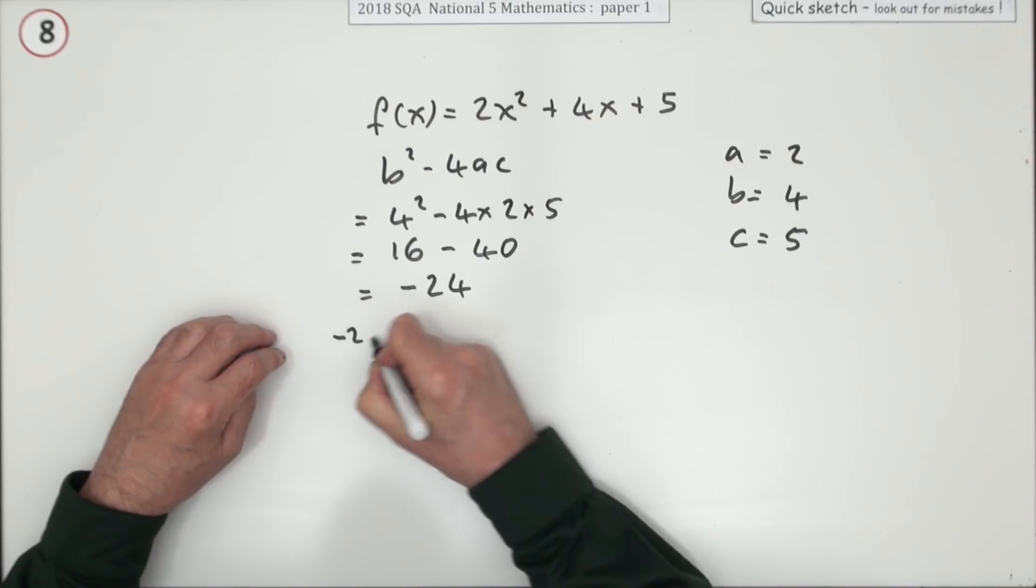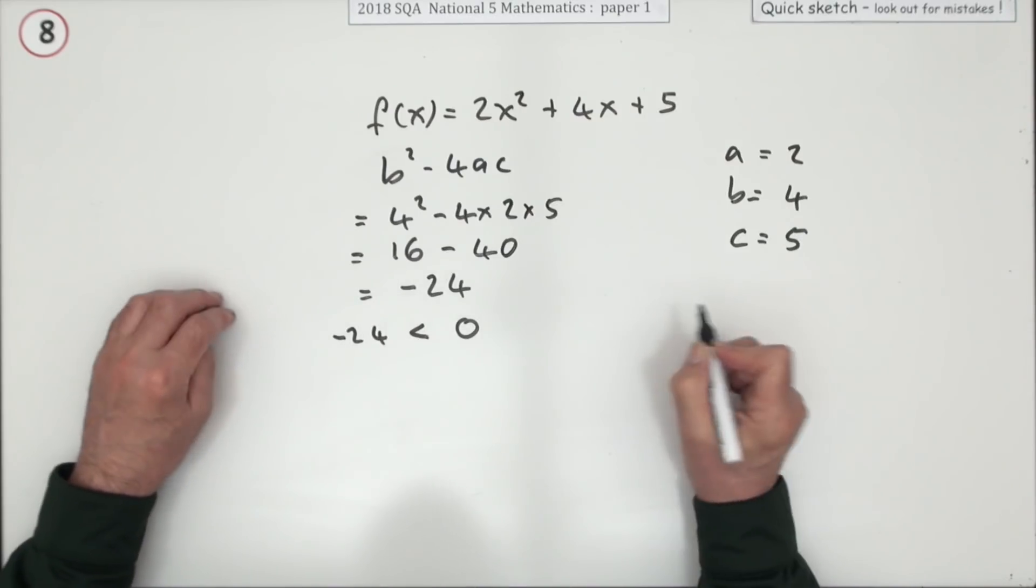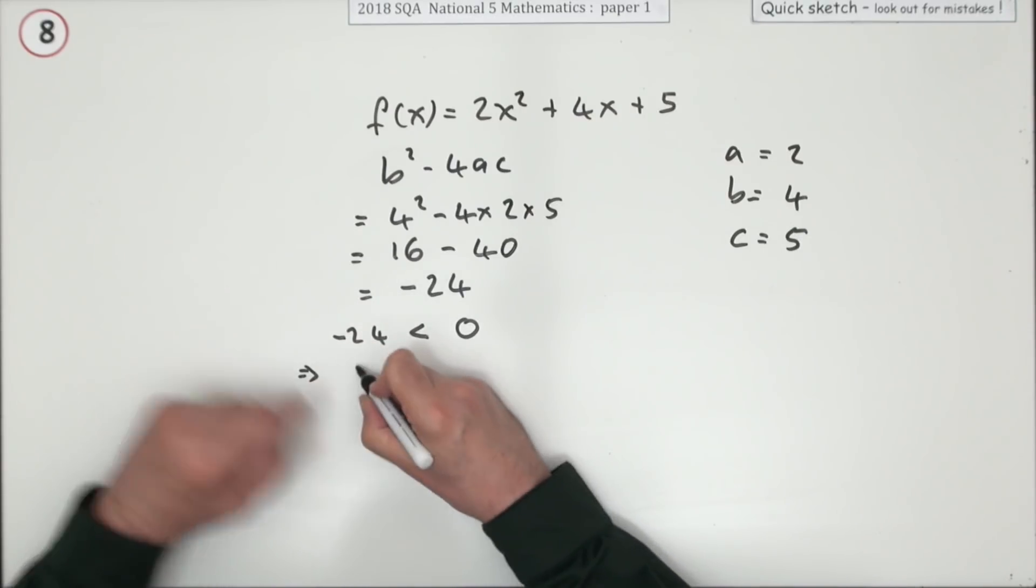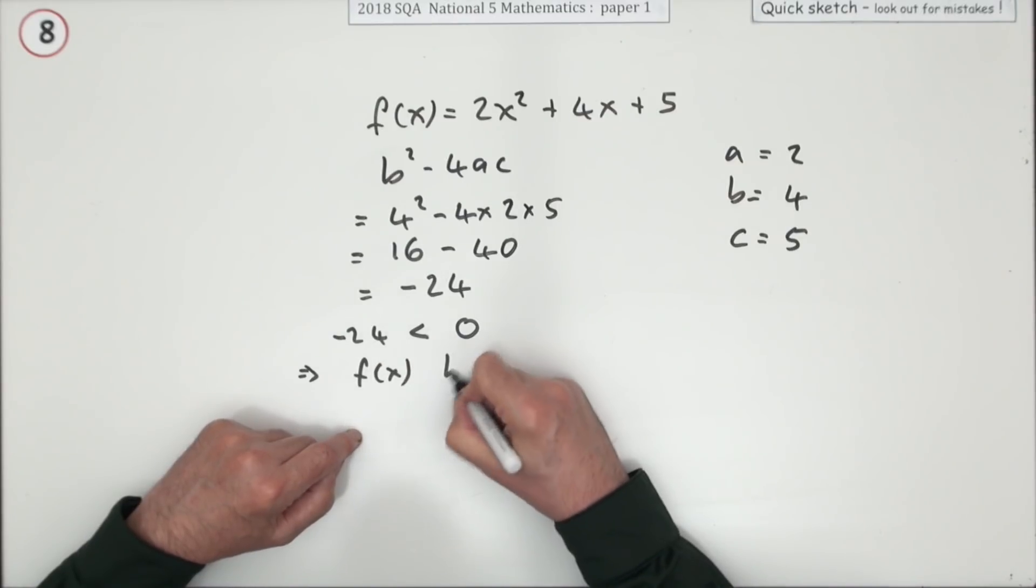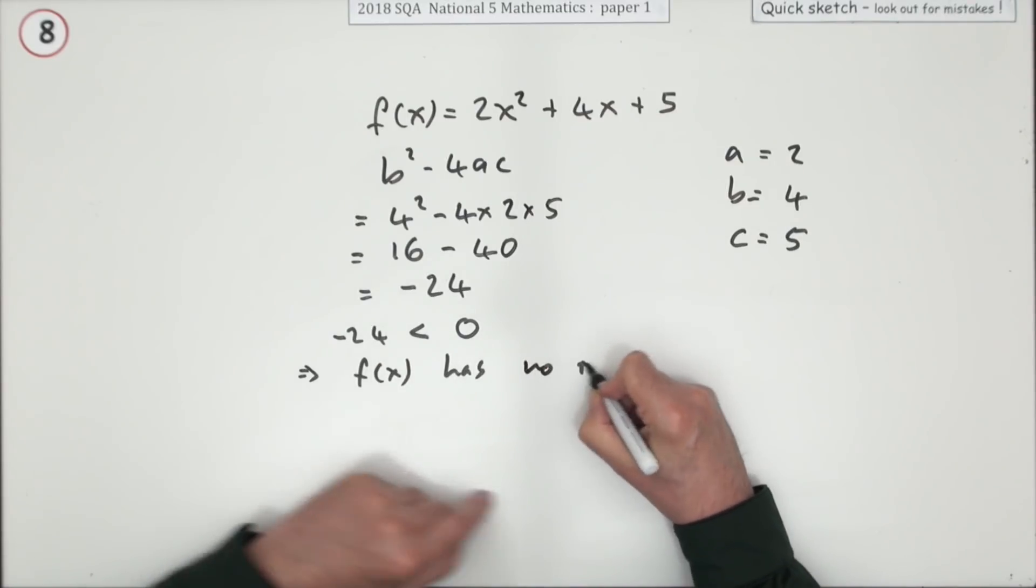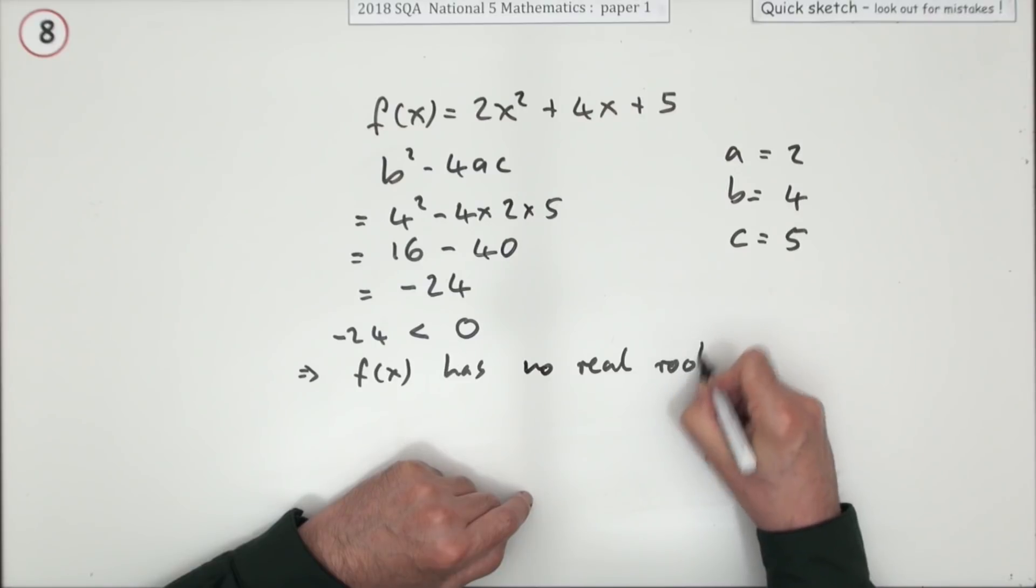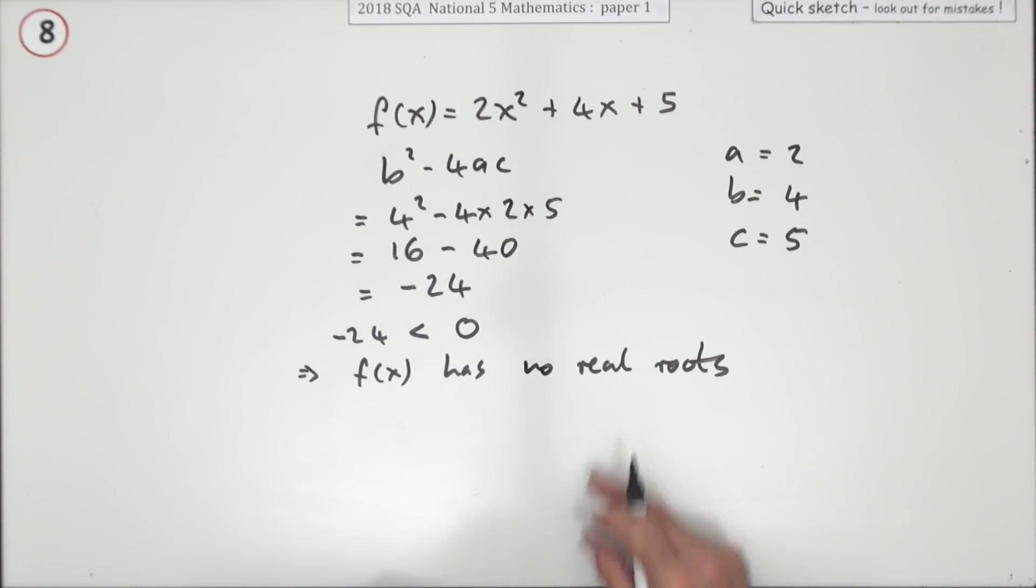Now since that, since negative 24 is less than zero, that means f(x) has no real roots, which we'll see since it used the word roots in the question.